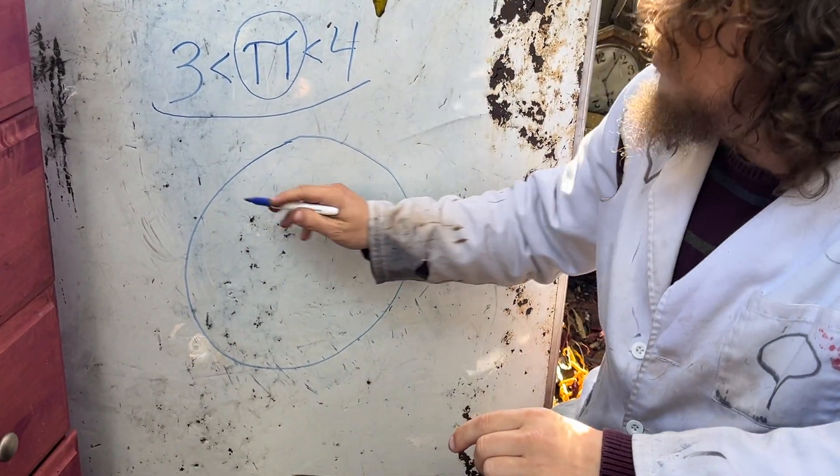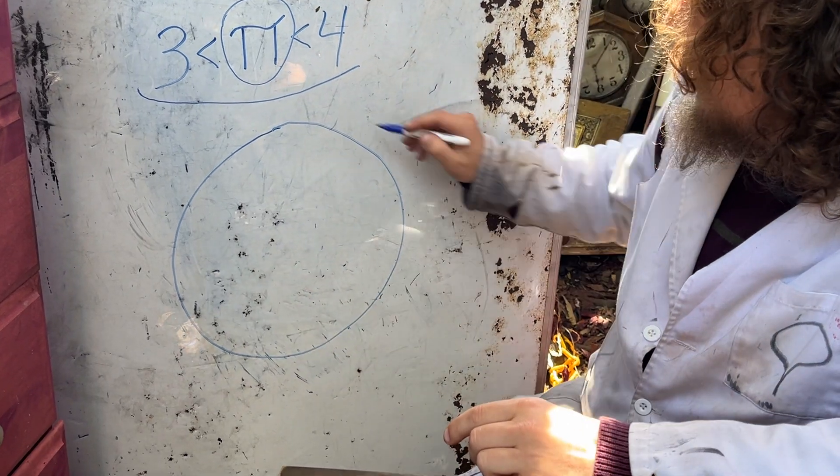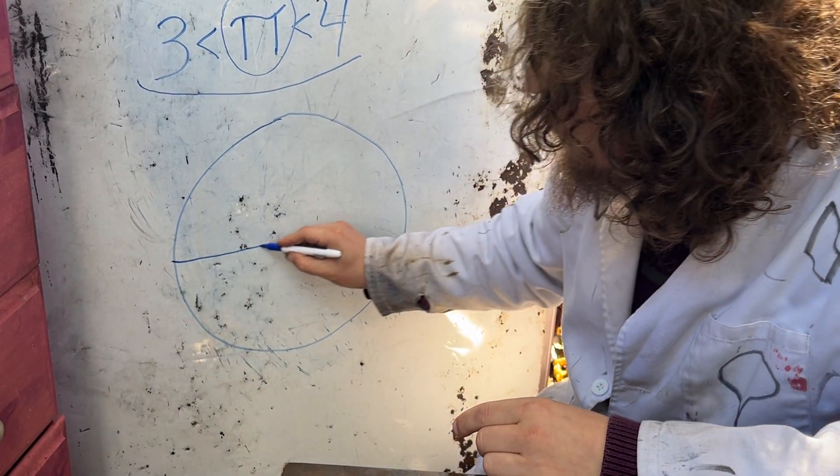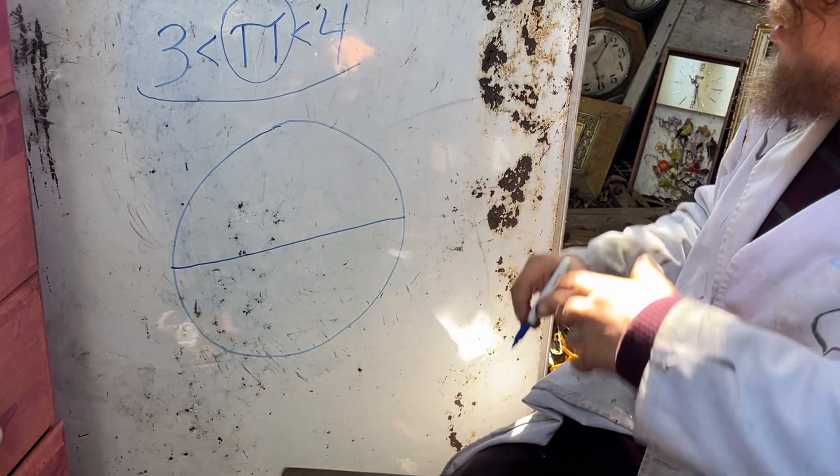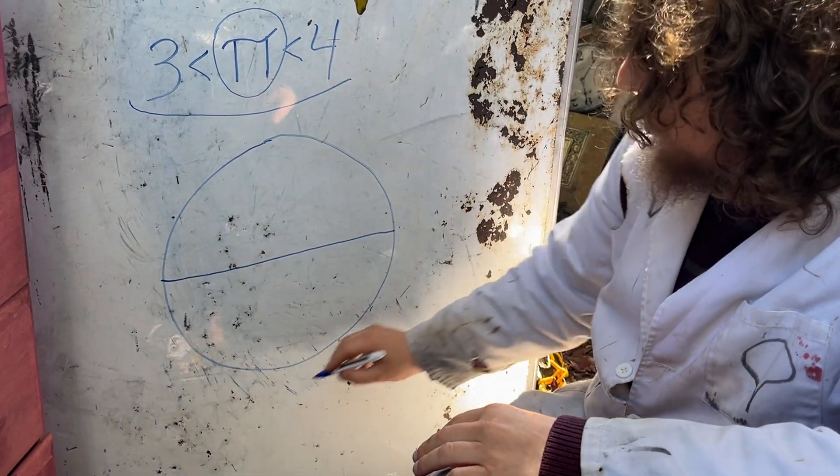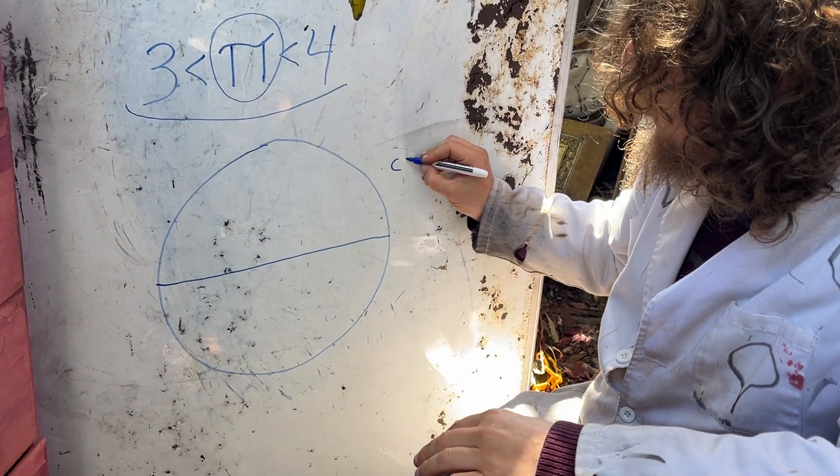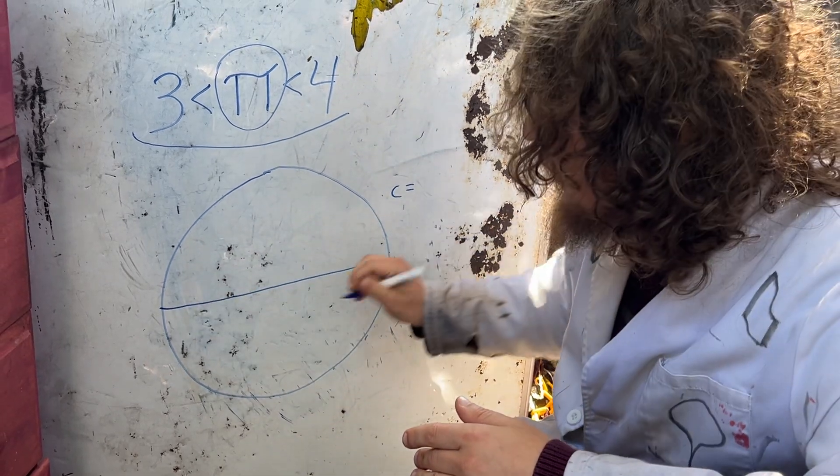Or in other words, we could say this circumference of the circle equals pi times the diameter.